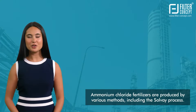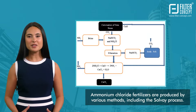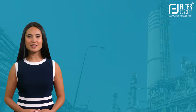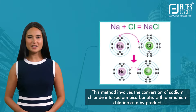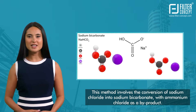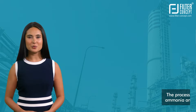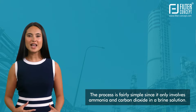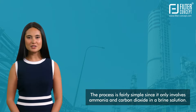Ammonium chloride fertilizers are produced by various methods, with the most well-known being the Solvay process. This method involves the conversion of sodium chloride into sodium bicarbonate, with ammonium chloride as a byproduct. The process is fairly simple, involving the reaction of ammonia and carbon dioxide with a brine solution.